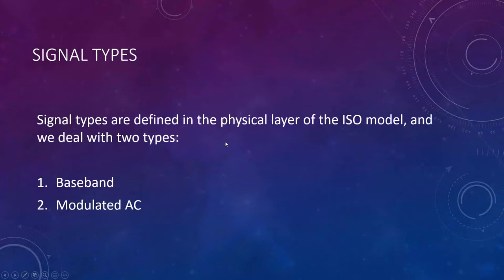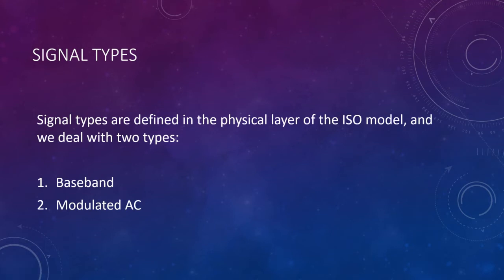In industrial networks, our focus is on digital data for the most part. Signal types are defined in the physical layer, and we'll talk about baseband signals and modulated AC signals. Baseband signals are digital signals representing ones and zeros using DC voltage levels or transitions between DC voltages. The two most common ones used in industrial networks are NRZ and Manchester encoding.